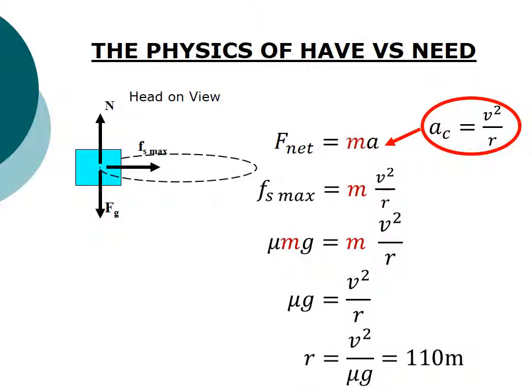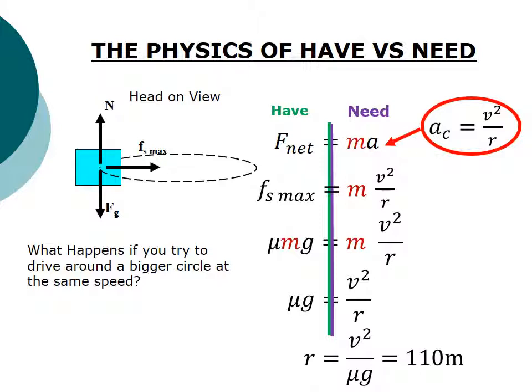Now let's take a look at the physics of have versus need. All right, so in this situation, just like before, we have so much force pushing towards the center. In this case, it is static frictional force, and we need so much force determined by mv squared over r.